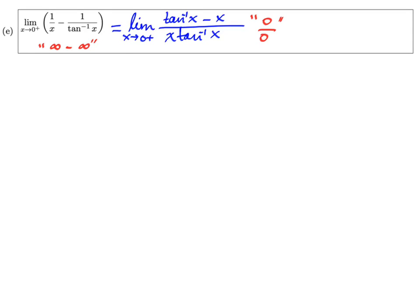All right, so now we can use L'Hôpital's rule. Using L'Hôpital's rule, we get the limit as x approaches zero from the right of the derivative of the top, which is 1/(1+x²) minus 1, over the derivative of the denominator. We have to use the product rule here, so it's the first times the derivative of the second plus the second times the derivative of the first.